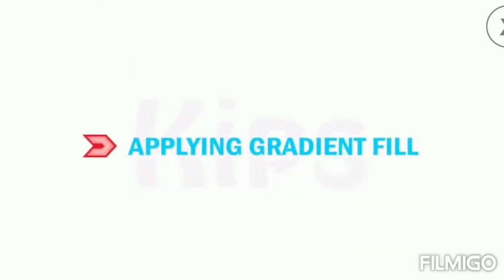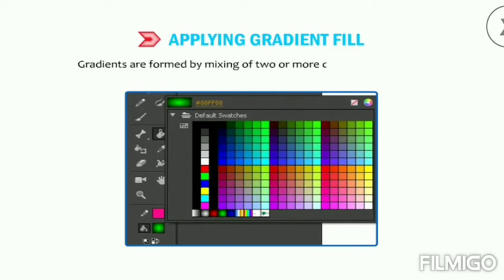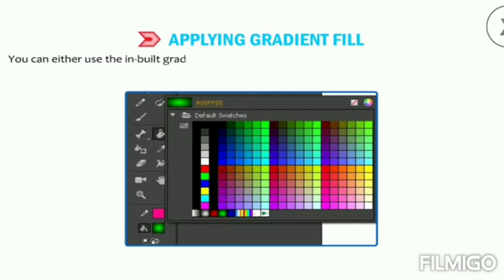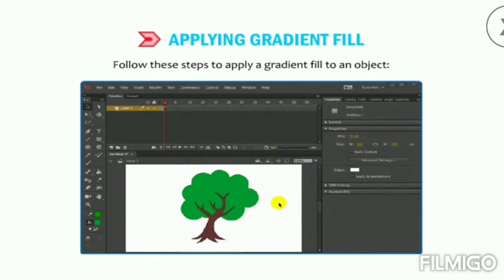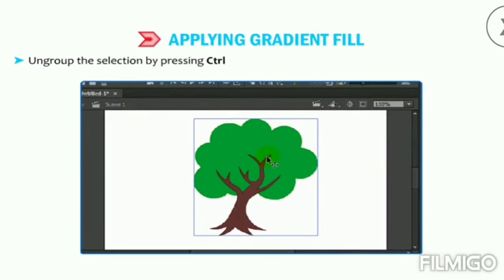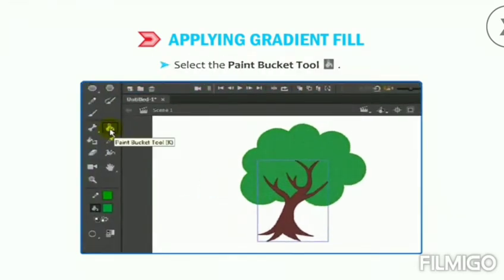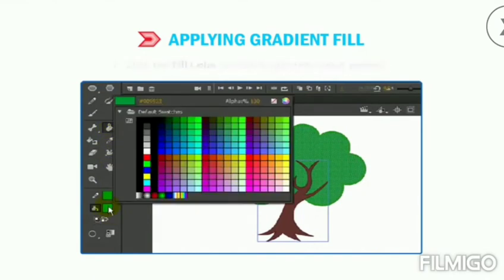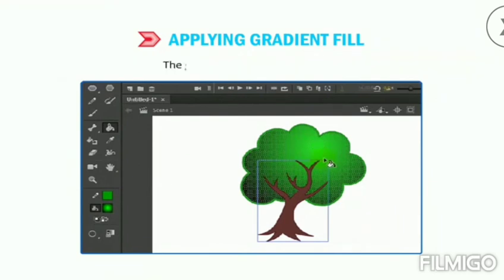A gradient is a multi-color fill in which one color gradually changes into another. Gradients are formed by mixing two or more colors. You can use inbuilt gradient presets from the Swatches panel or create your own in the Color panel. To apply a gradient fill: select the tree using the Selection tool, ungroup with Ctrl+Shift+G, select the Paint Bucket tool, click the Fill Color swatch, select the green gradient from the Swatches panel, and click inside the tree top — the gradient fills the shape.